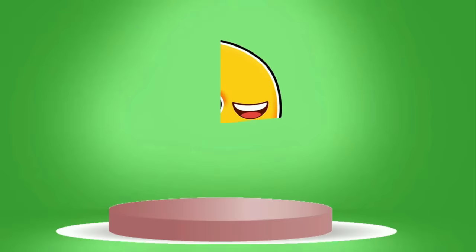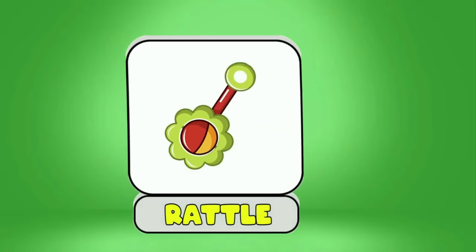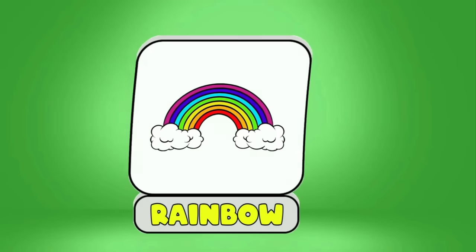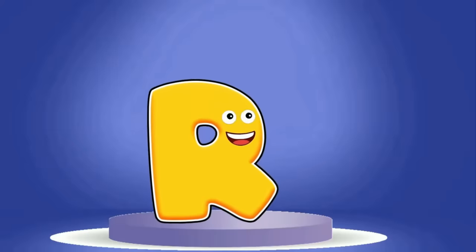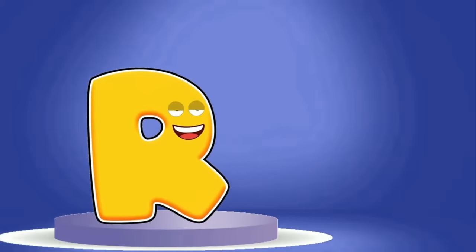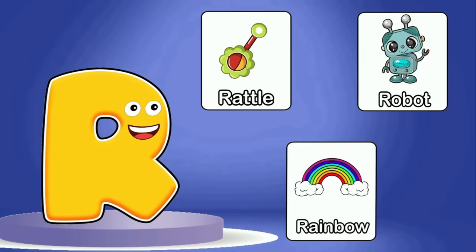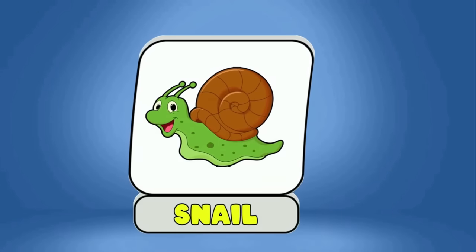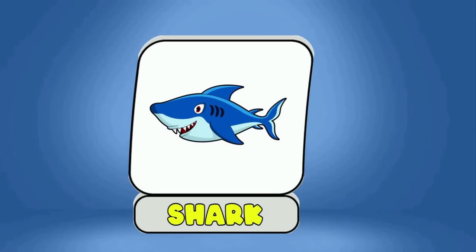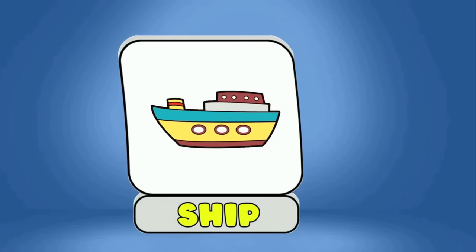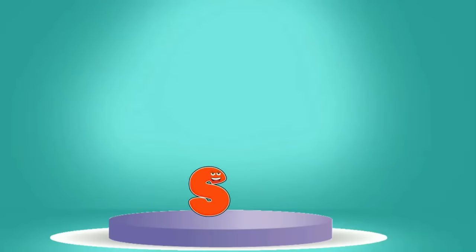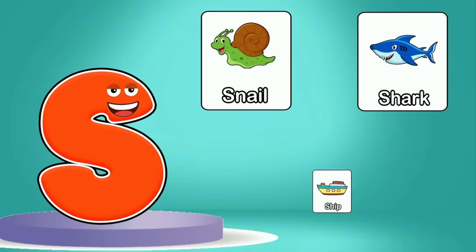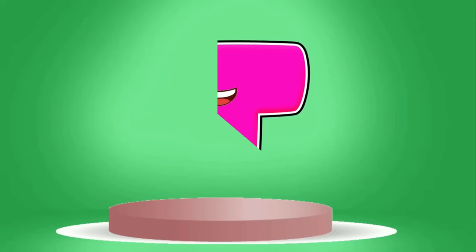This is R. R is for Rattle, Robot, Rainbow. This is S. S is for Snail, Shark, Ship.